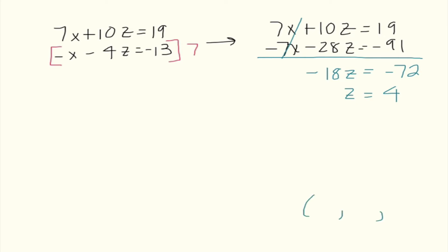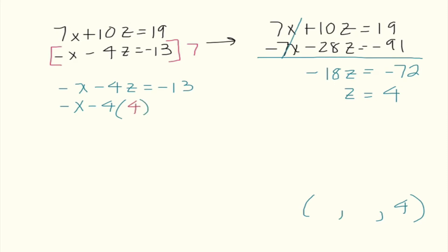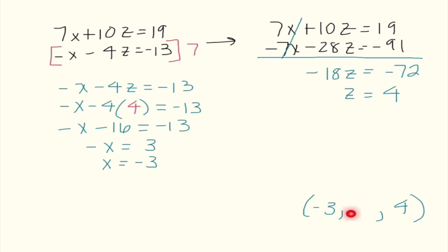So I'm writing 4 as our z coordinate in the ordered triple. Now I know z, but I still need to figure out x and y. I'll use one of the two equations we created and substitute 4 in for z. I get negative x minus 16 equals negative 13, so negative x equals 3, and x equals negative 3. I know that negative 3 is the x value of my ordered triple. To figure out y, I'll have to go back and use one of my original equations with three variables and substitute both x and z in.